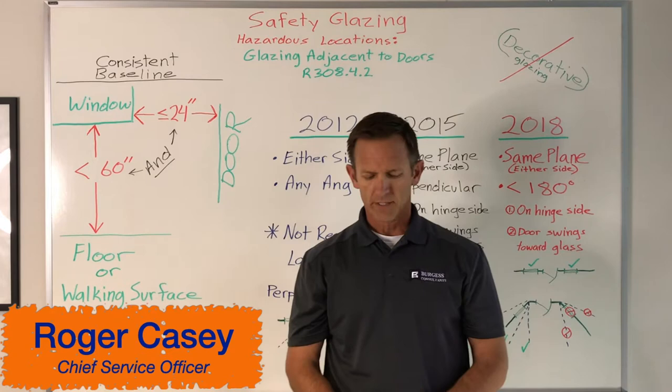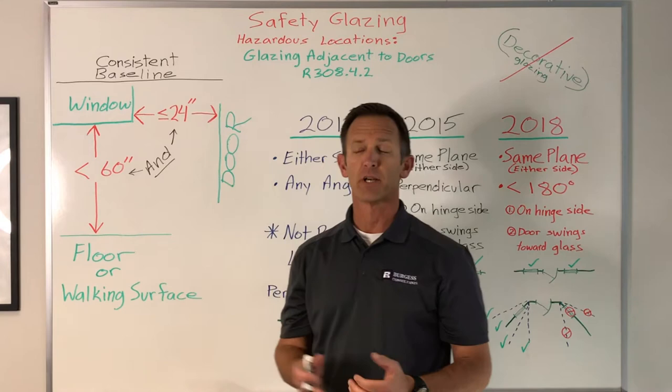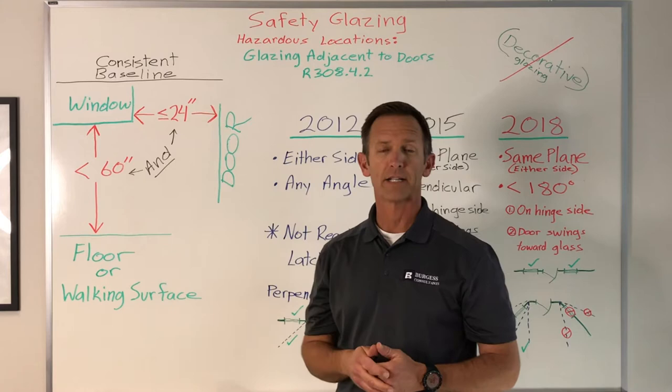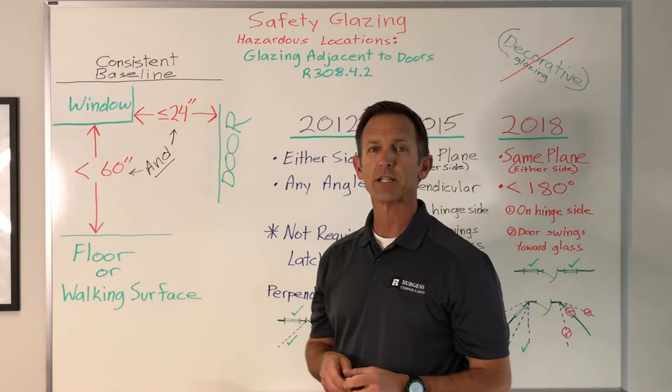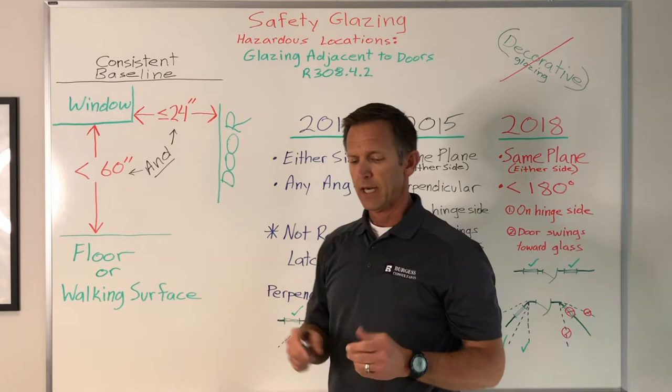Roger Casey with Burgess here to talk about glass today. Glass can be beautiful but also very dangerous if not addressed properly. The code addresses hazardous locations for glass and specifically identifies seven of those. Today we're focusing on one of those locations: any glass glazing adjacent to doors, which is section 308.4.2.